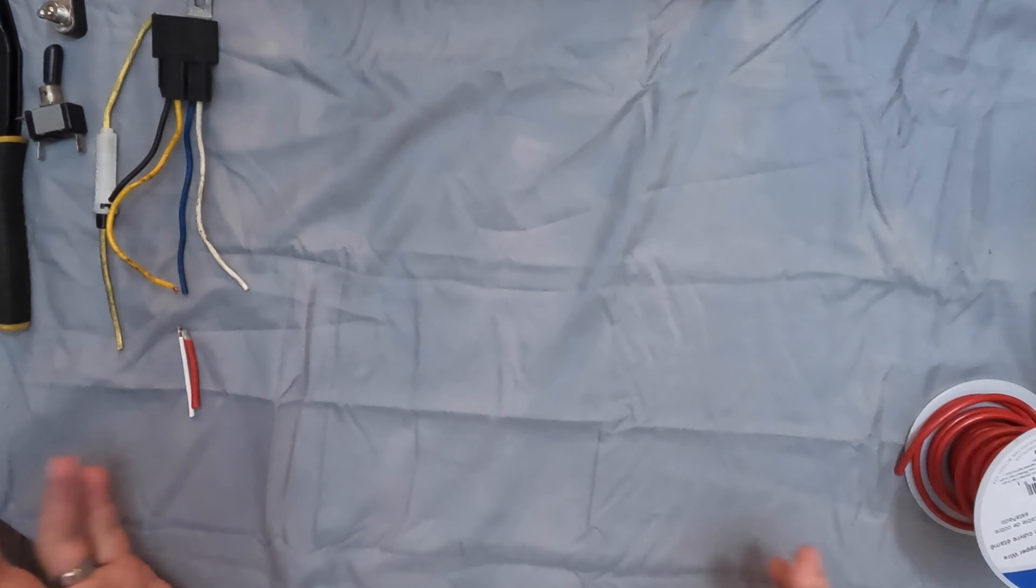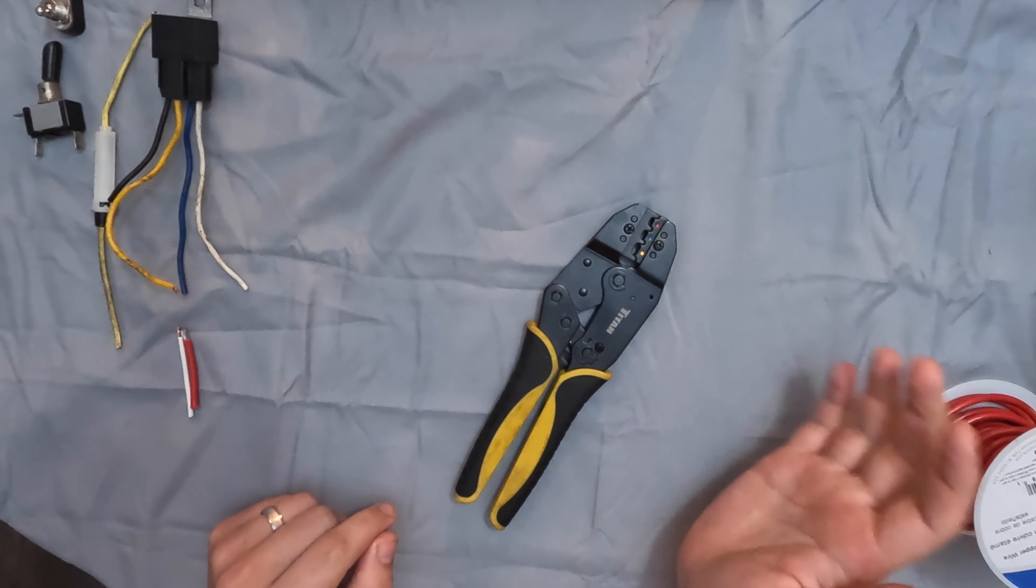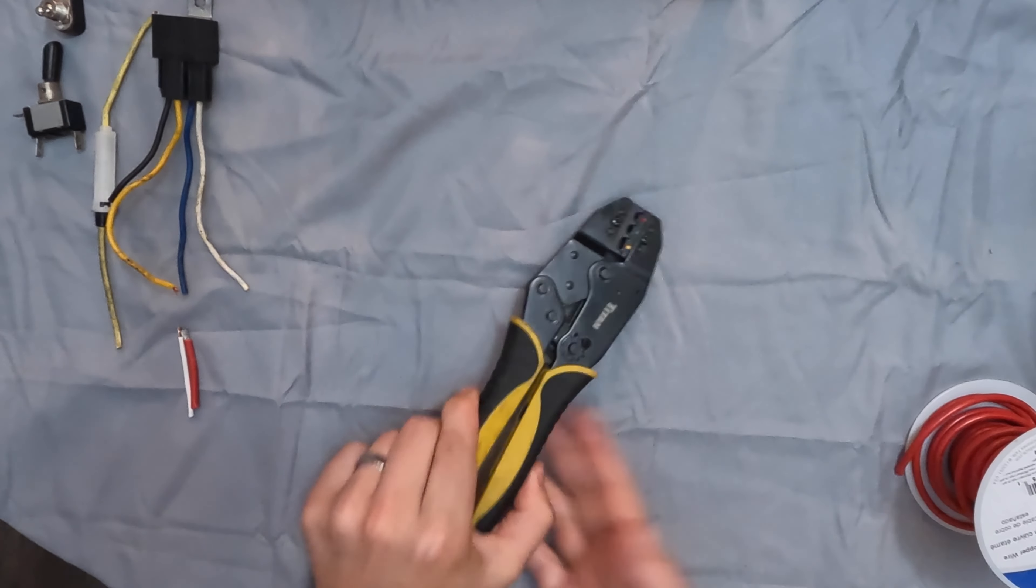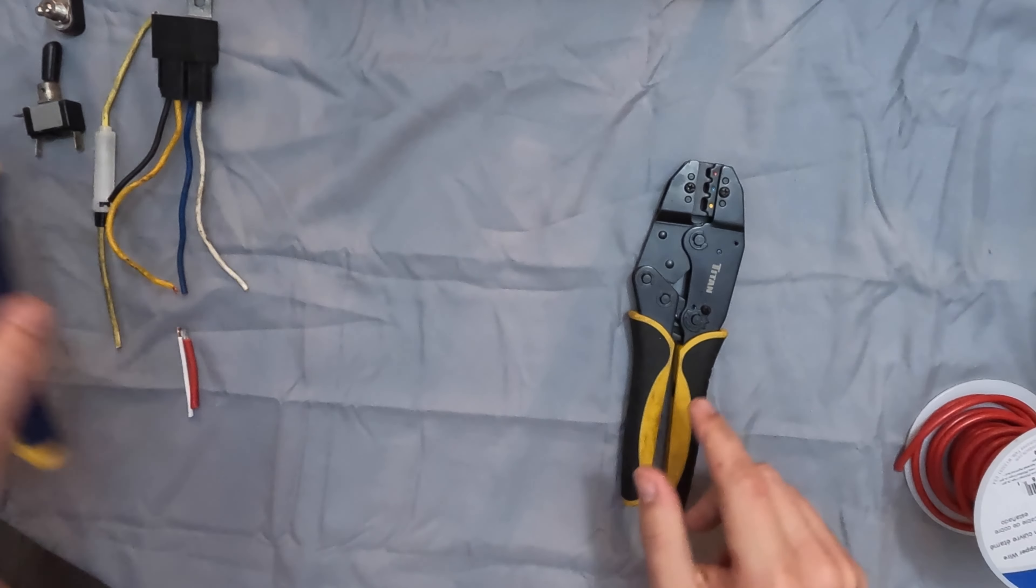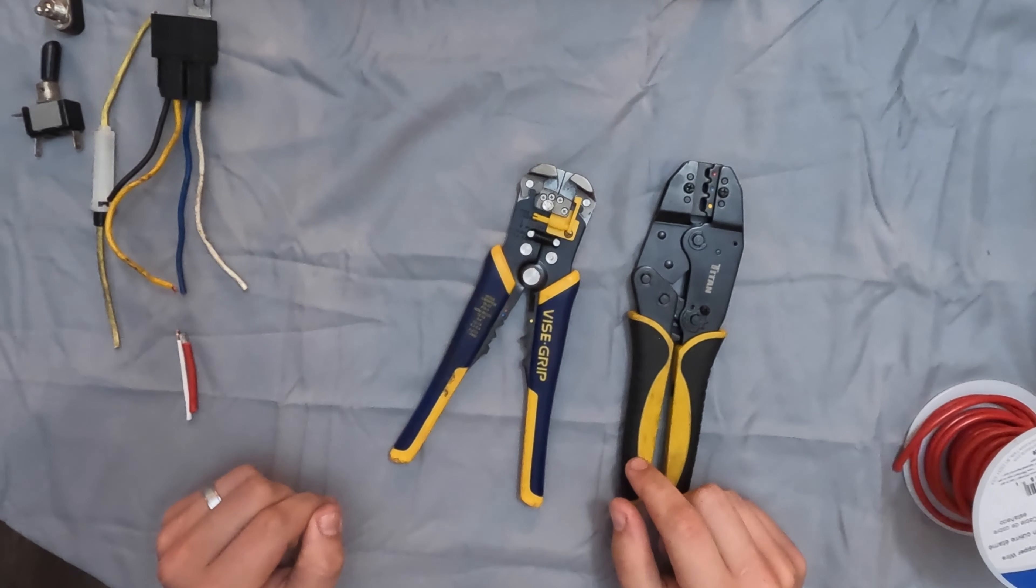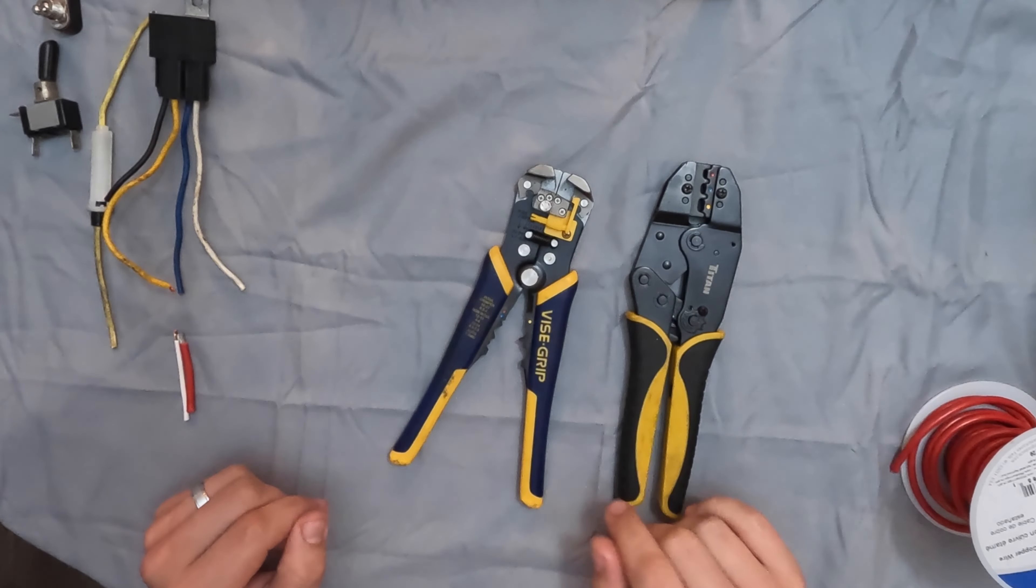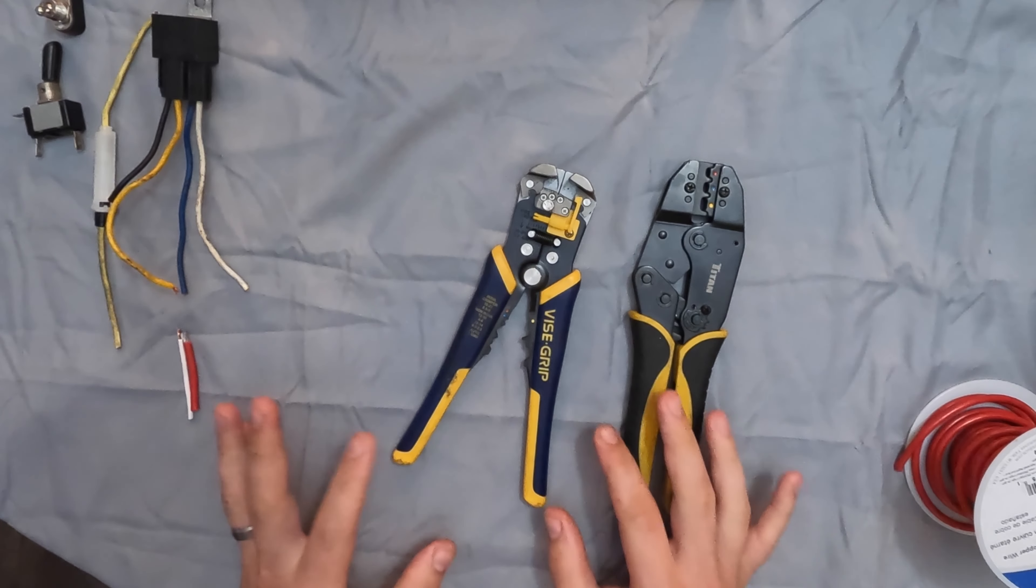You're going to need a wire crimper. I really like this Titan one. It's a ratcheting style crimper, so it works great. And then you're going to need a wire cutter and stripper. This one is by Vicegrip. You can get both of these on Amazon. They're pretty cheap.